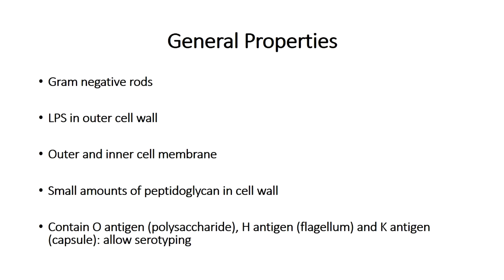They have an O-antigen, which refers to the polysaccharide part of the lipopolysaccharide. They have an H-antigen, which refers to the flagellum that confers motility to the organism. They also have capsular antigens referred to as K-antigens. Together, the O-antigen, the H-antigen and the K-antigen allow one to serotype bacteria in this family into distinct bacteria.